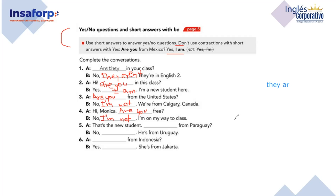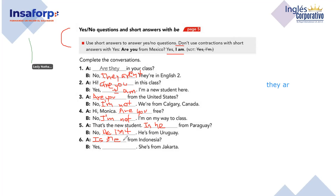And the new student — is he from Paraguay? So we have 'is he' — exactly, 'is.' Is he from Paraguay? 'No, he isn't — he's from Uruguay.' Is she from Indonesia? 'Yes, she is.' Very good.